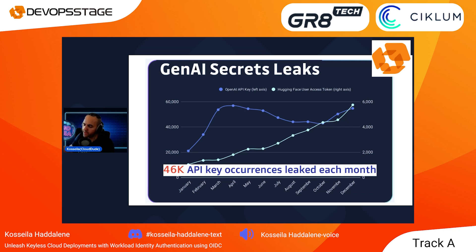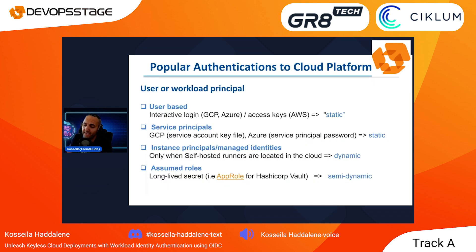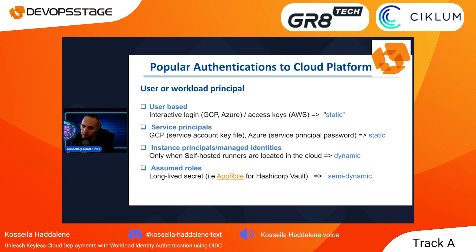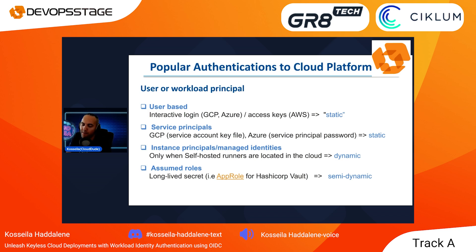So what are the popular cloud authentication standards when we want access to the cloud? Traditionally, connecting to cloud platforms from GitHub or anywhere involved using either user or machine workload principles. You got user-based with interactive login for GCP and Azure, or access keys for AWS — but these are static credentials. Then you have service principles: account key files or service account key files for GCP, or service principle passwords — still static credentials. And then instance principles for your EC2 VM, also called managed identities, which require self-hosted runners running in your cloud.